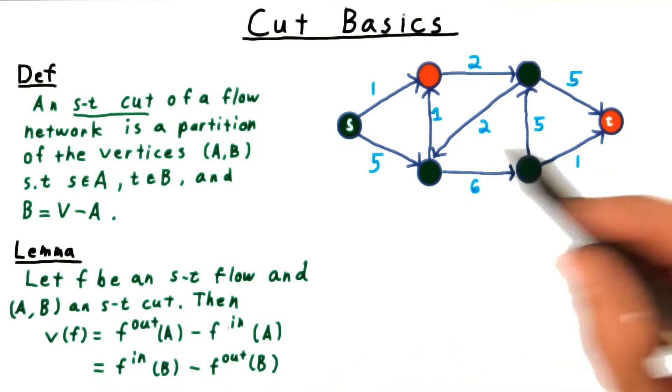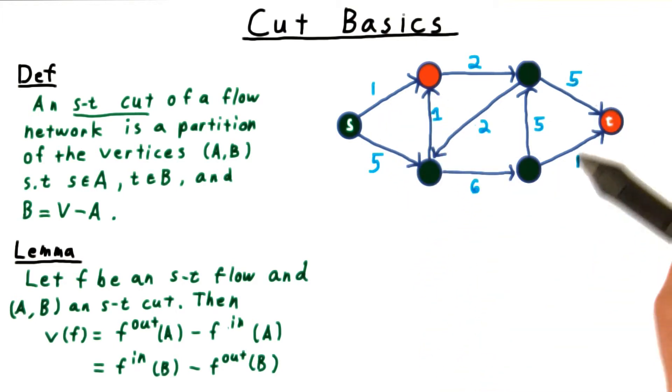In this example here, we have 1 plus 1 plus 5 plus 1 exiting A, and 2 units entering over here for a total of 6.